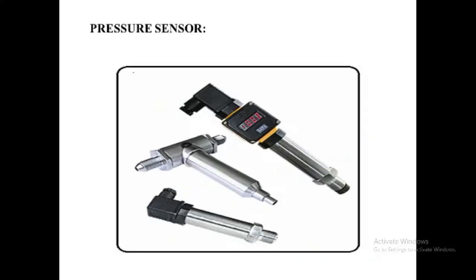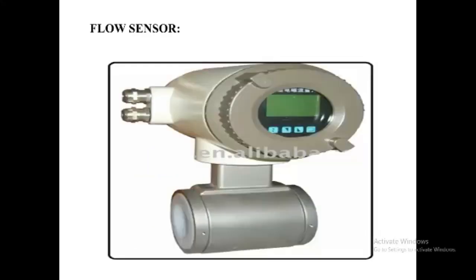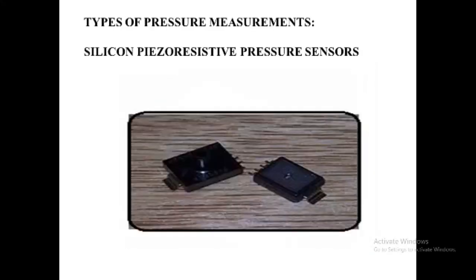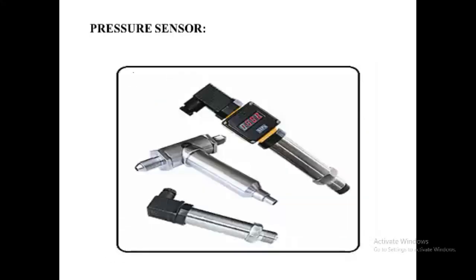The second sensor is the pressure sensor. A pressure sensor measures pressure, typically of gases or liquids. Pressure is an expression of the force required to stop a fluid from expanding and is usually stated in terms of force per unit area. A pressure sensor usually acts as a transducer and generates a signal as a function of the pressure imposed. Such a signal is electrical. Pressure sensors are used for control and monitoring in thousands of everyday applications.